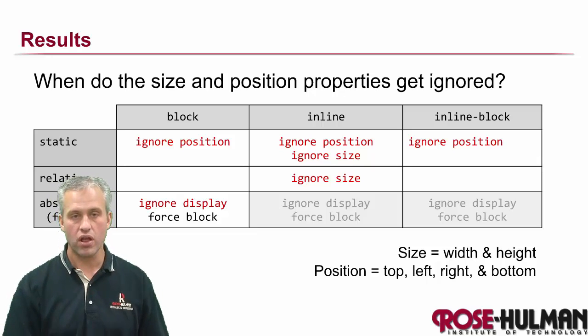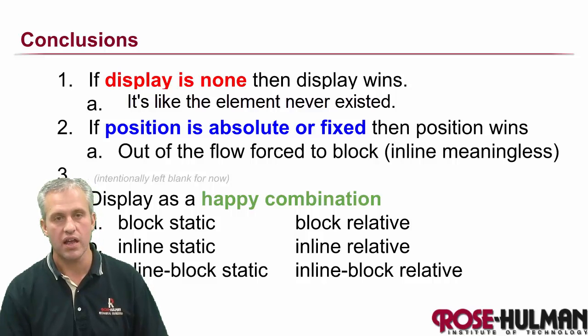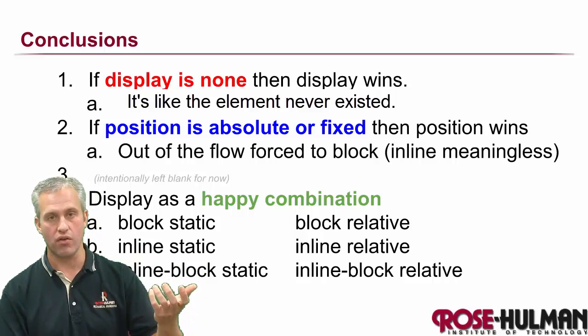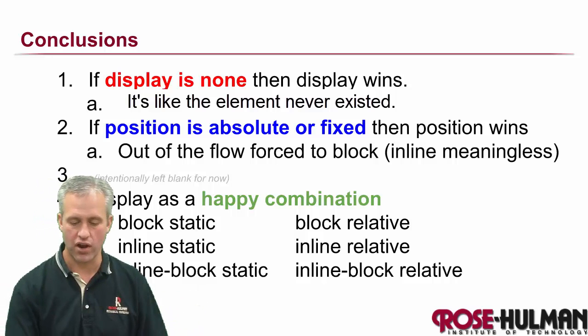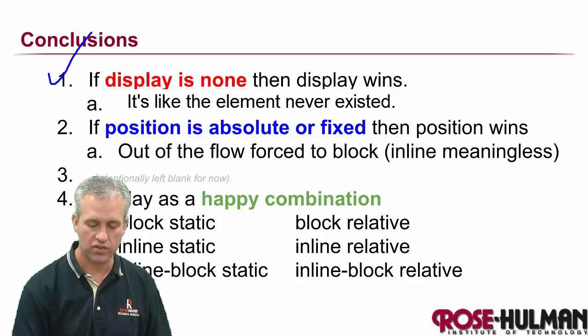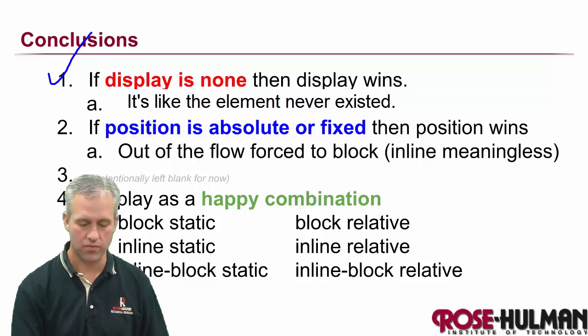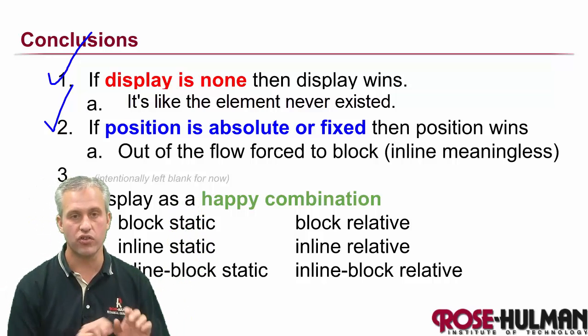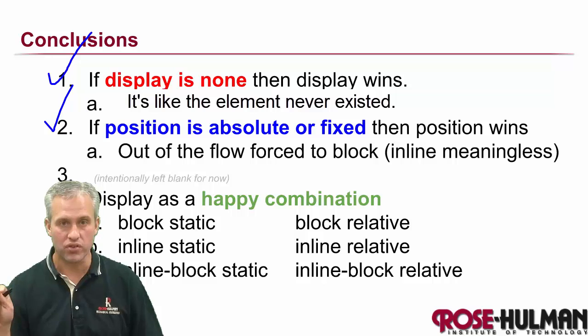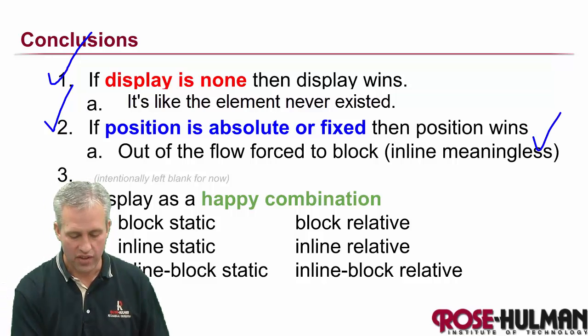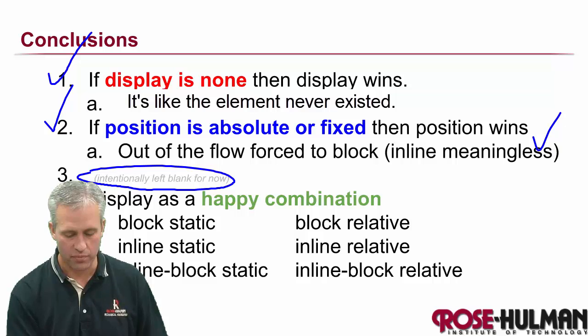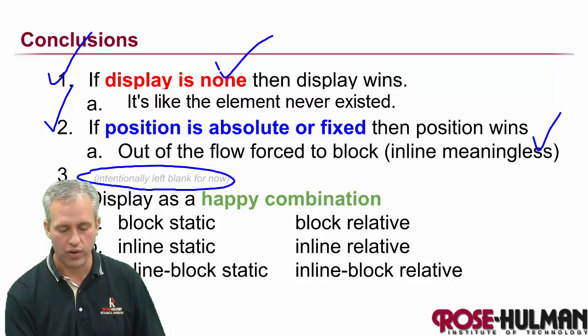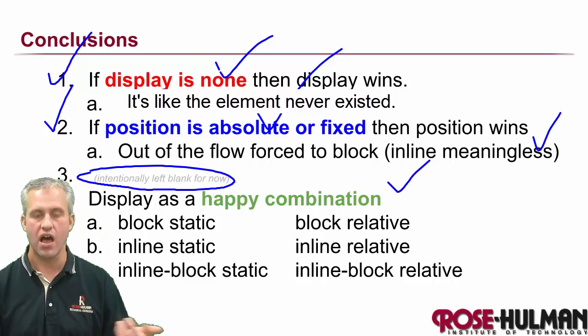So that's the summary of our table that we can figure out how these things work and how they interact. It seems simple when you do it this way. If you wanted to write that table in terms of rules, if you're trying to decide on rules, your first rule is if it's display none, nobody else matters. If it's not display none, so you know it's one of the other display rules, next thing you look at is the position property. If it's fixed or absolute, then it has these behaviors, right? And then rule number three, intentionally left blank for now. And then if it's not one of those crazy guys like out of the flow or gone, then it's some happy combination that uses that table.